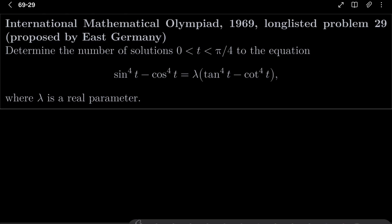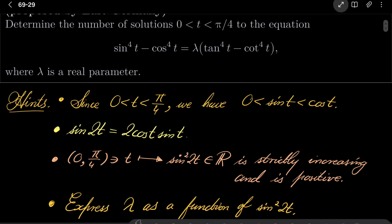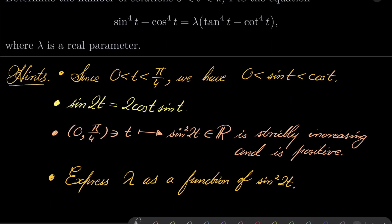Here are my hints. Notice first that since t is from 0 to π/4, sine is greater than 0 and is less than cosine. Also, this identity will be useful: sin(2t) = 2cos(t)sin(t). Notice that the function mapping t ∈ [0, π/4] to sin²(2t) is strictly increasing and positive. Finally, try to express λ as a function of sin²(2t).